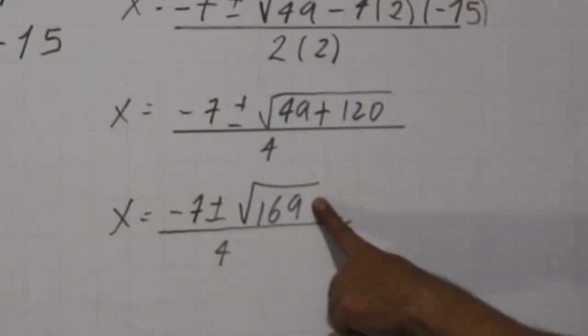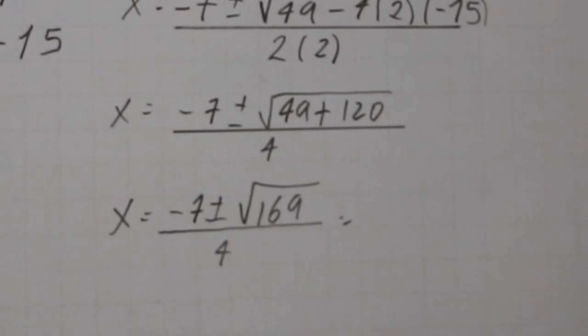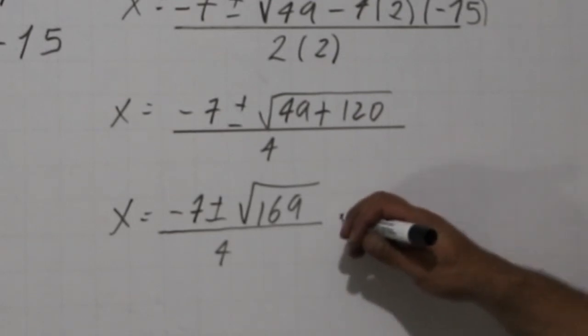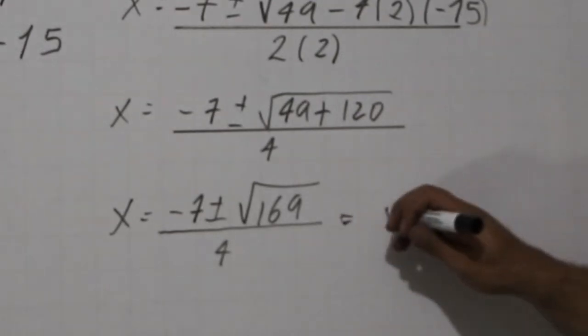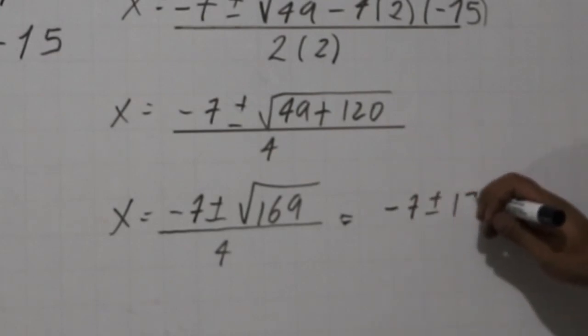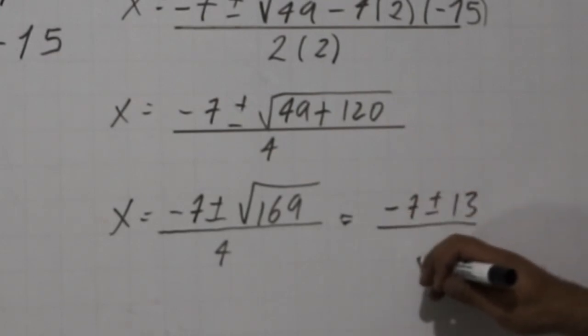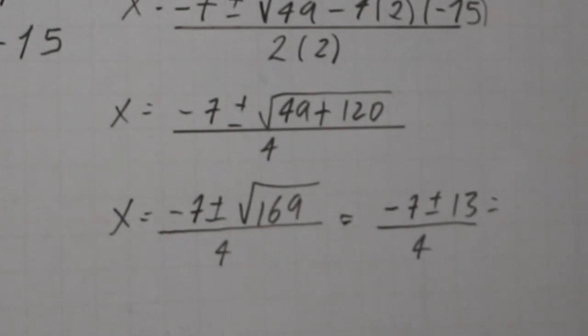Hey, look at this. 169 is a perfect square. That means that the square root is going to be a whole number. So we have minus 7 plus or minus 13, and 4.